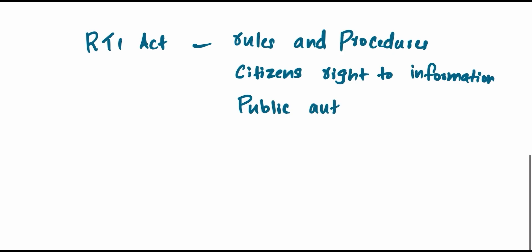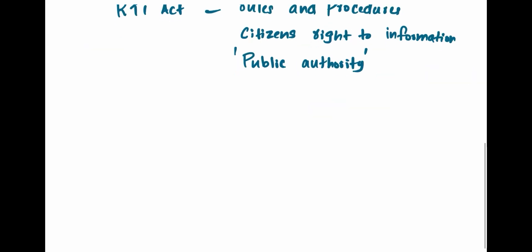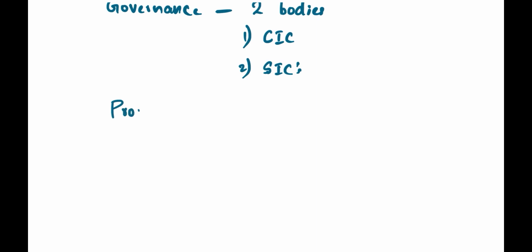Remember, public authorities here mean the governmental body or an instrumentality of the state. Private persons are excluded from this act. Hence, political parties are not covered under this act. With regard to the governance of Right to Information in India, there are two major bodies: the Central Information Commission and State Information Commissions.